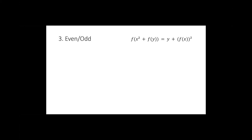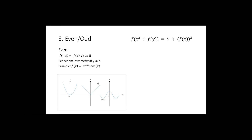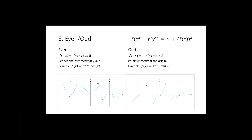But first, I'll introduce even and odd functions. An even function is one where f(−x) equals f(x) — you can imagine that the graph has reflectional symmetry at the y-axis. Examples include x to an even power or cosine of x. An odd function is the opposite: f(−x) equals −f(x). The graph has point symmetry at the origin. Examples include x to an odd power or sine of x.